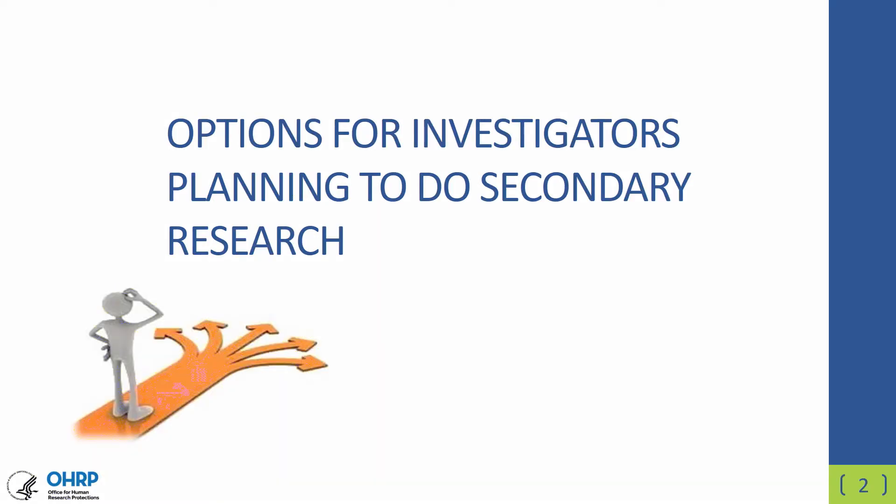In this part two webinar, I'm going to concentrate on talking about the options for investigators planning to do secondary research. In part one, we covered basic concepts on what secondary research is, what identifiability means, and we talked about the options for doing secondary research with non-identifiable materials, as well as doing secondary research with identifiable private information and identifiable biospecimens. In this particular webinar, we'll concentrate on looking at these options from the investigator's perspective.